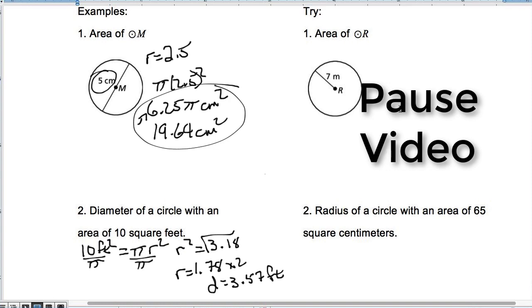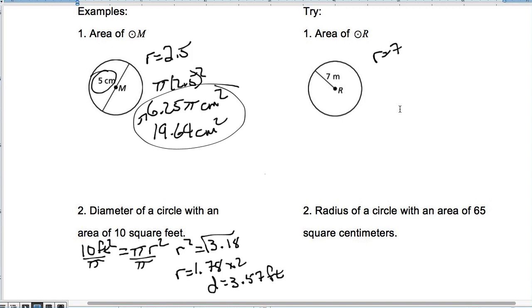Number 1, my radius is, in fact, 7. So I'm going to have pi times 7 squared. So I have 49 pi meters squared. And if I ask you to times that or round it to the nearest hundredth, you would have 153.94 meters squared for that one.